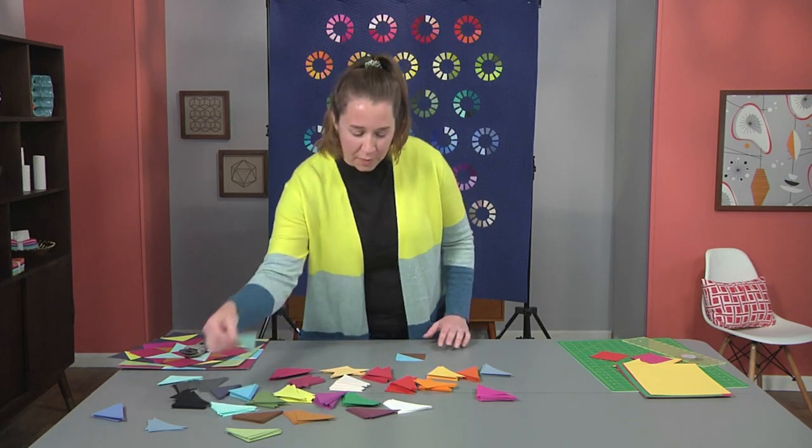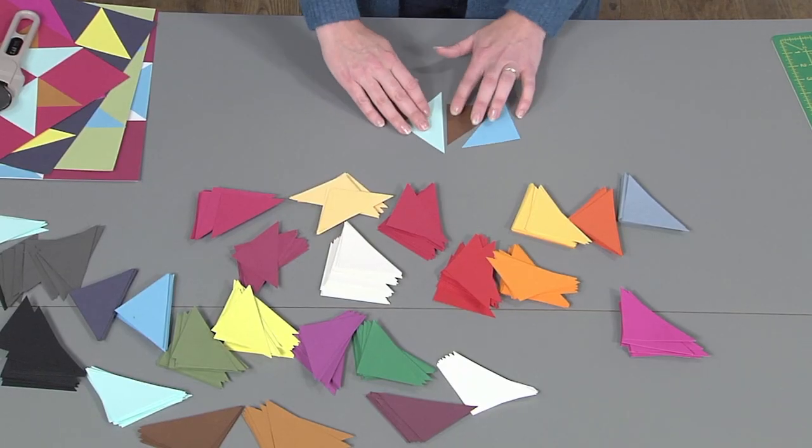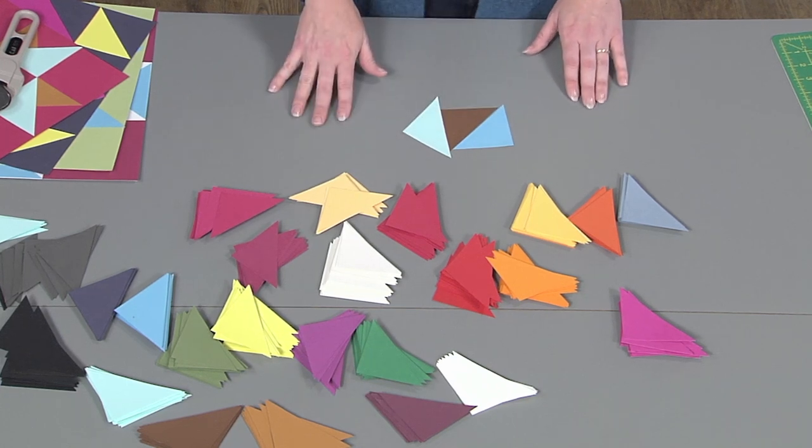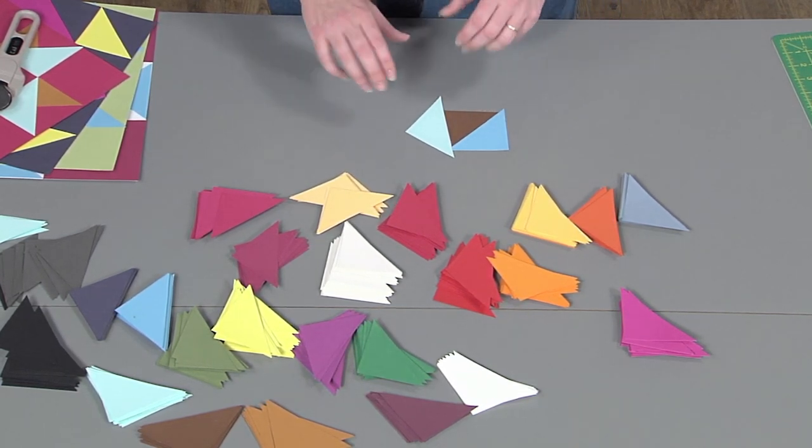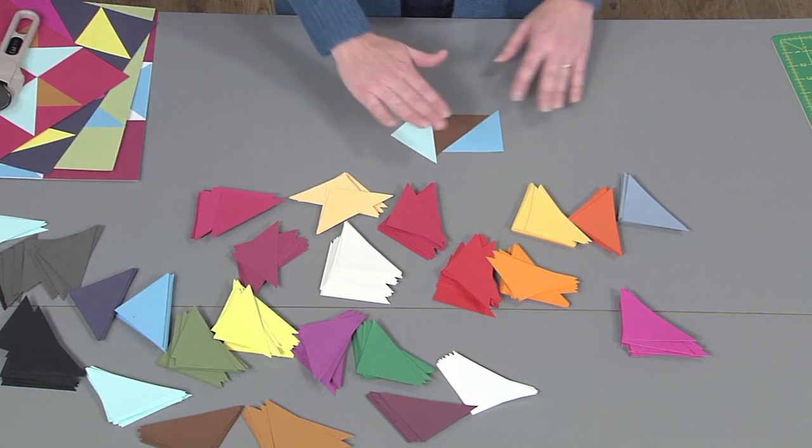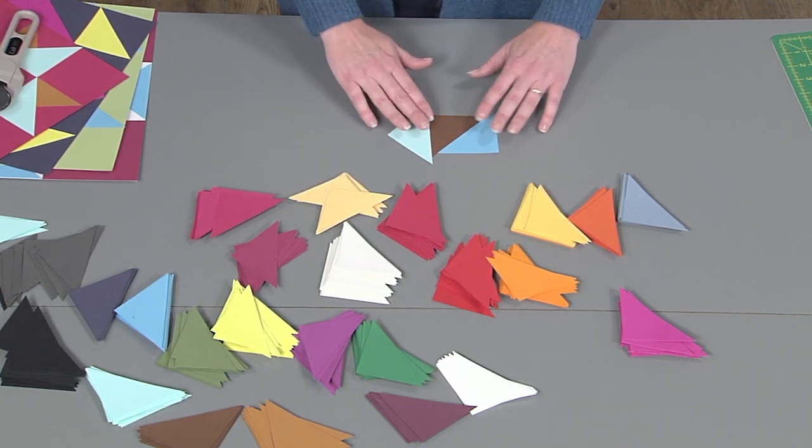But I do like combining this brown with a bit of aqua or blue. That kind of offsets some of that deeper reddish brownish tone there. So that might be a combination that I would work with.